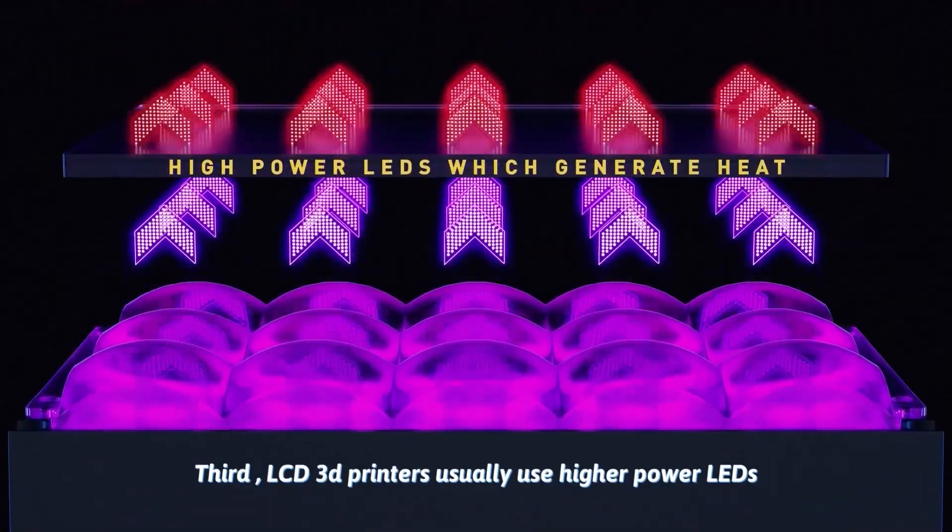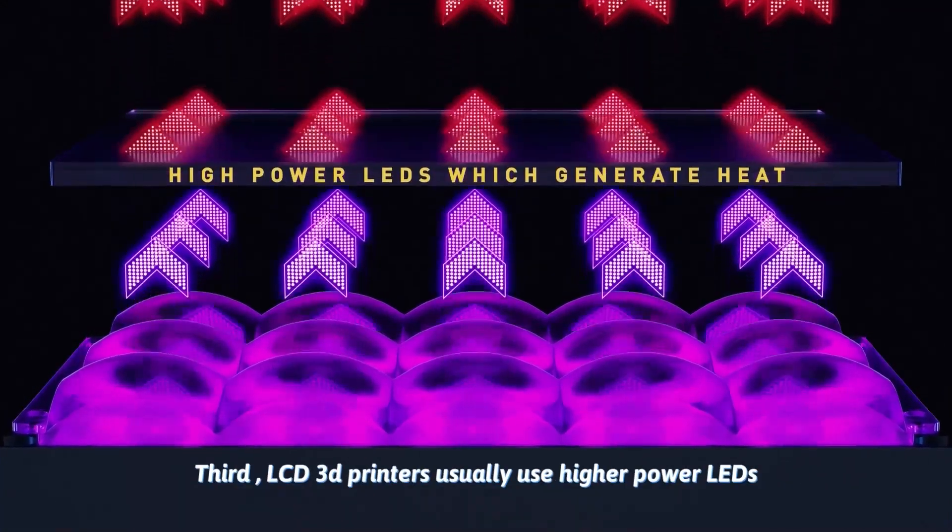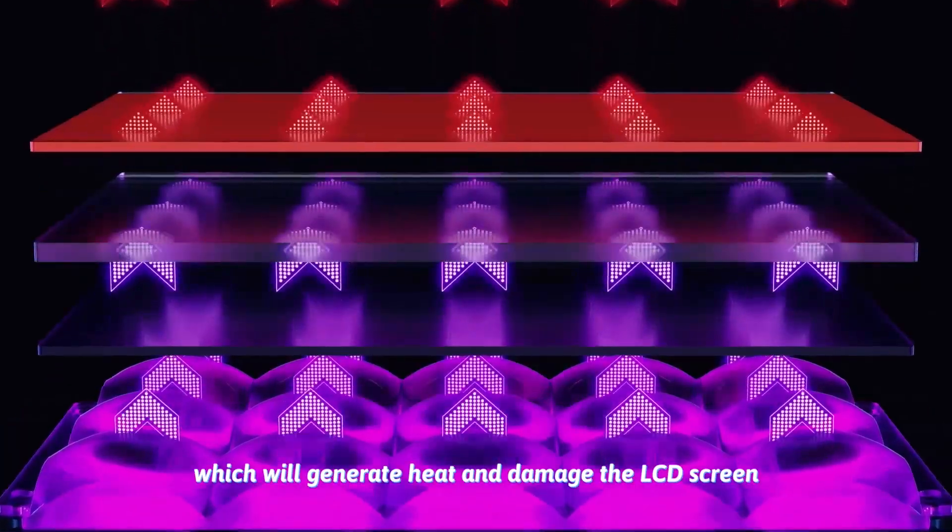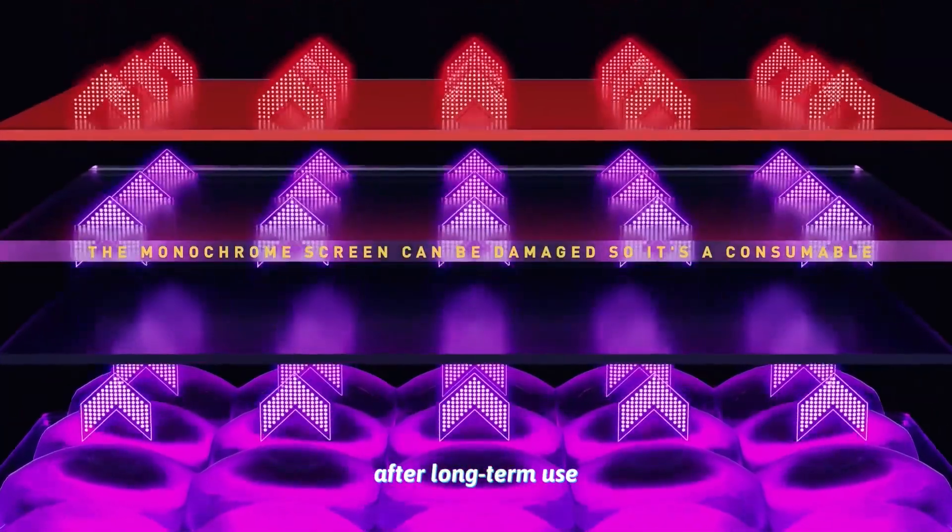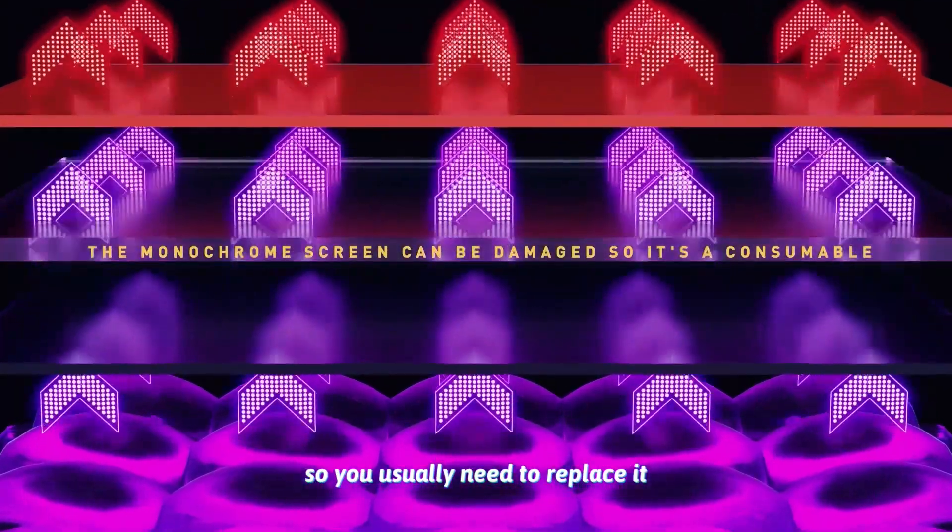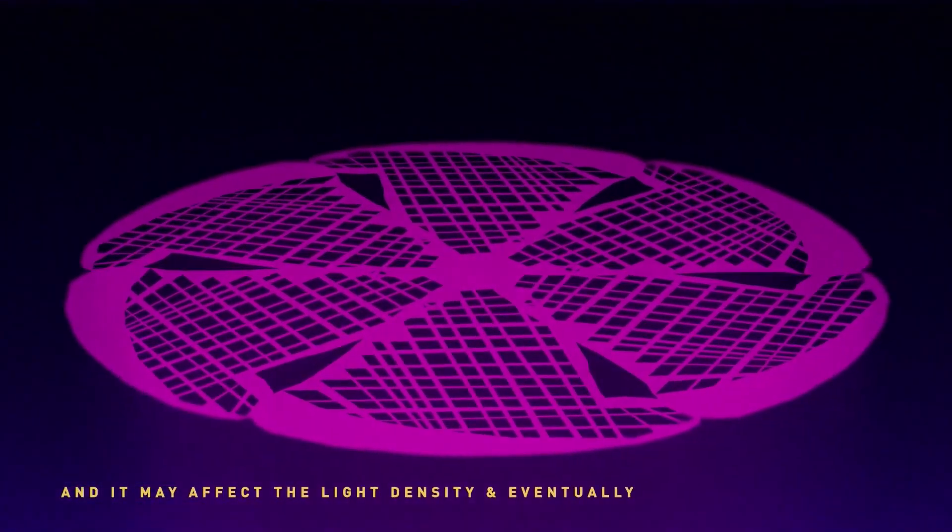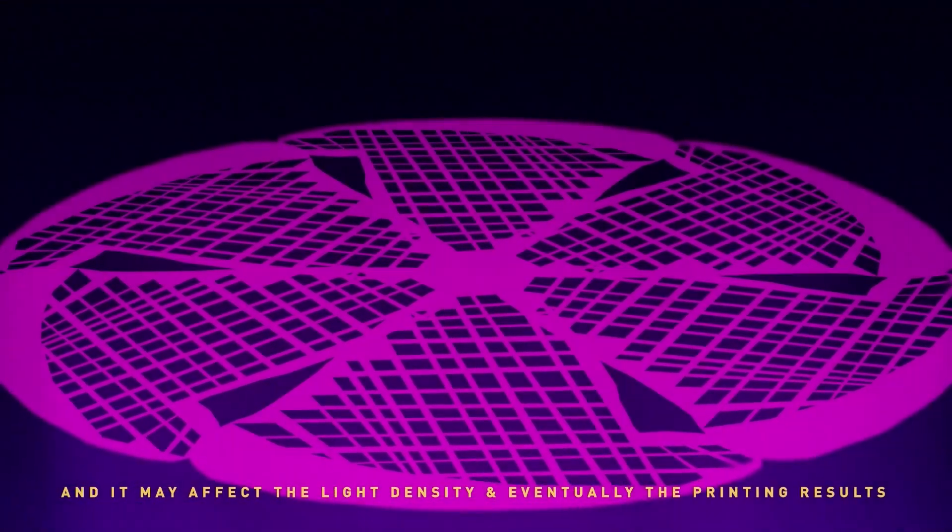Third, LCD 3D printers usually use higher-power LEDs which will generate heat and damage the LCD screen after long-term use, so you usually need to replace it, and the heat may also affect the light density and the printing results.